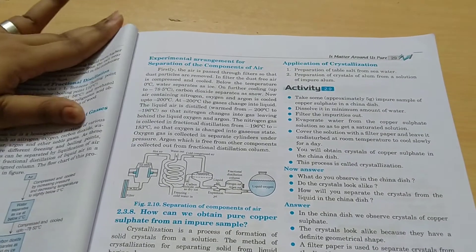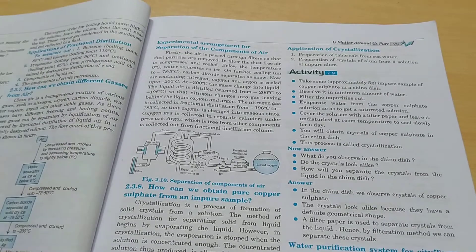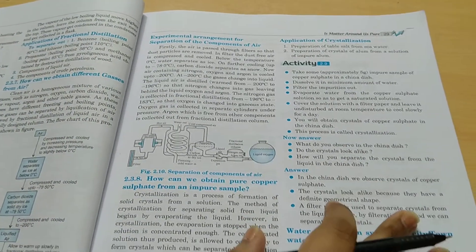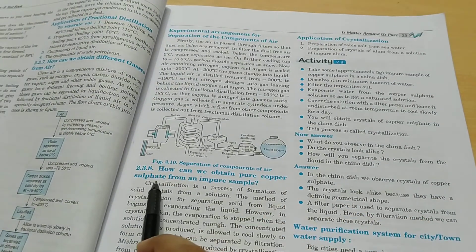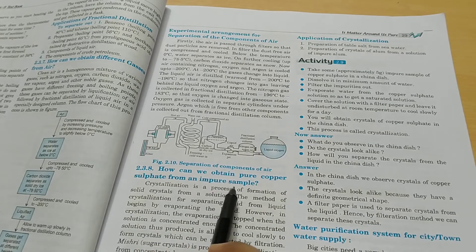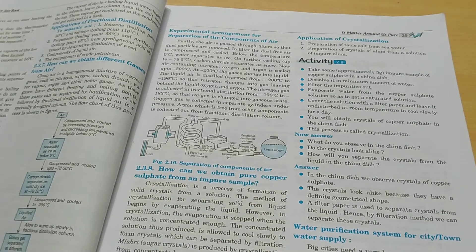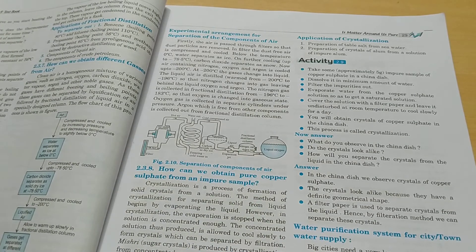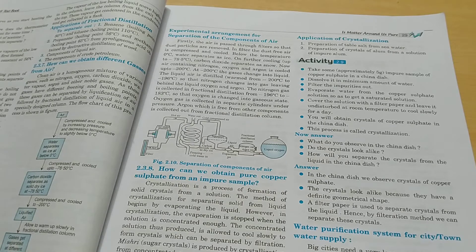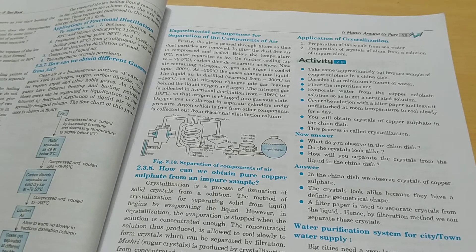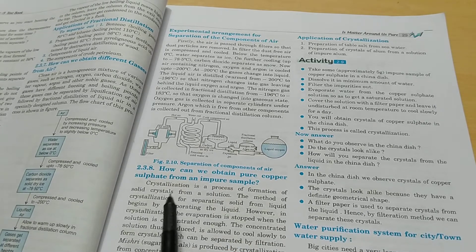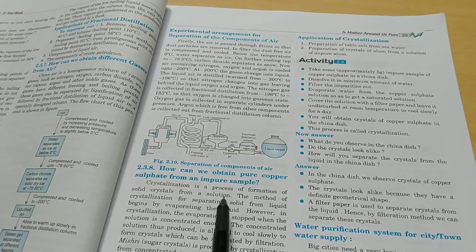Read it by yourself. When we read it, we get more understanding. Now, how can we obtain pure copper sulphate from an impure sample?